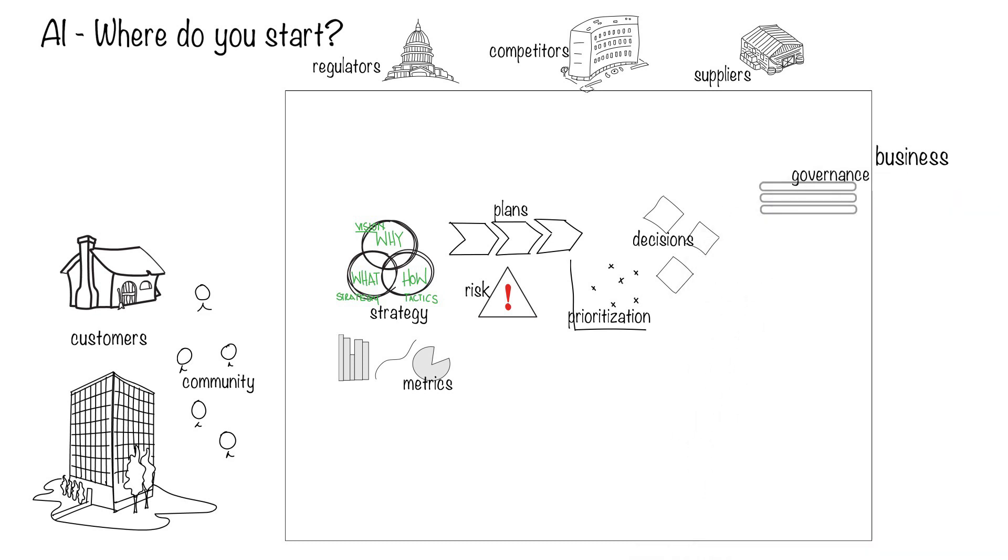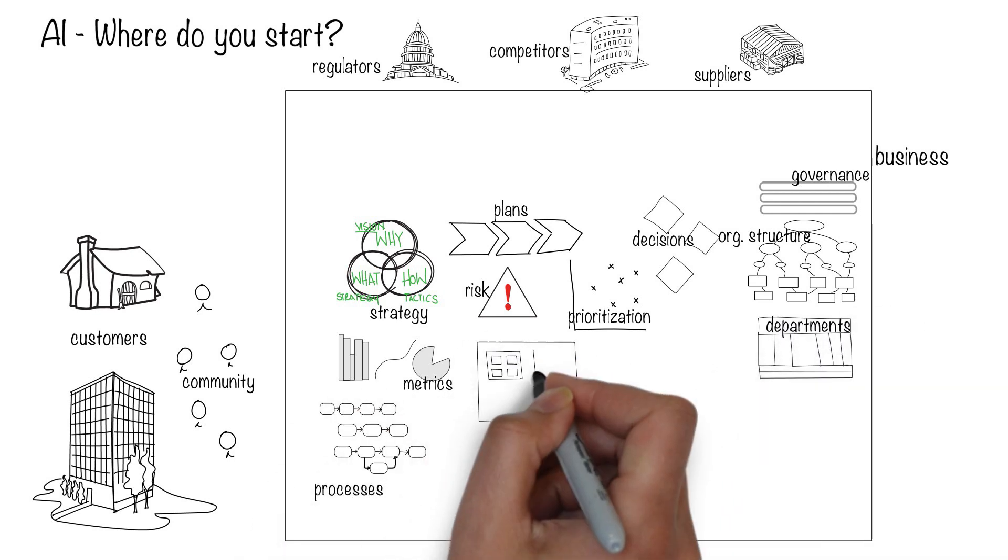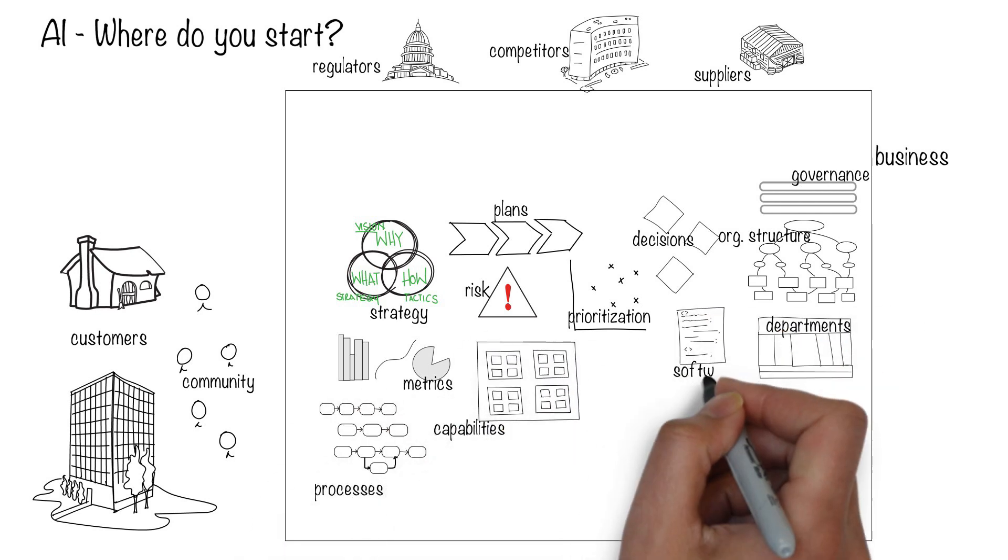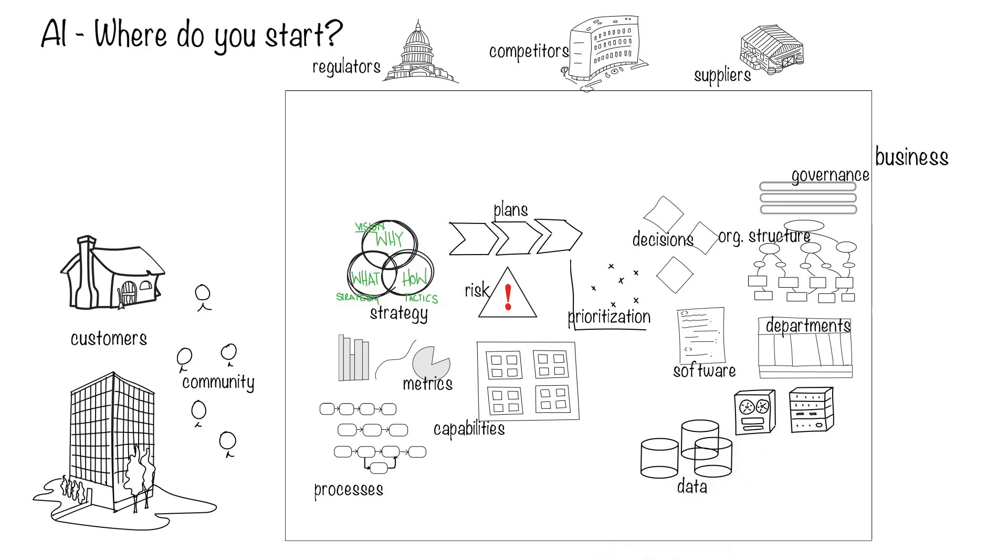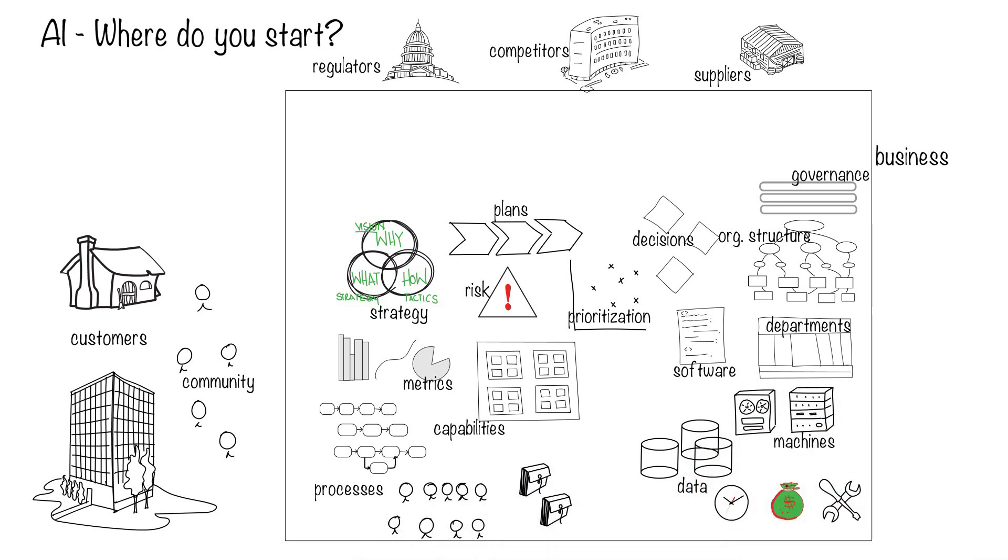Operational elements include things like org structure, business departments, processes, capabilities, software applications, data, computing hardware, time, money, resources, people, training, products, channels, facilities, and supplies.